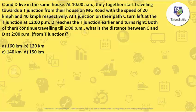Let's check this question. C and D live in the same house. At 10 am they together start traveling towards a T-junction from their house on MG Road with speeds of 20 kmph and 40 kmph respectively. At the T-junction, C turns left at 12 pm. D reaches the T-junction earlier and then turns right. Both of them continue traveling till 2 pm. What is the distance between C and D at 2 pm from the T-junction?